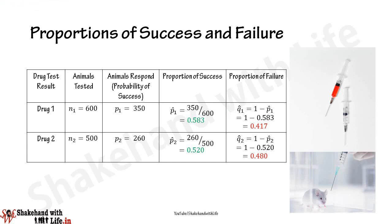The proportion of success in sample two is p2-cap equals 260 divided by 500, which comes out as 0.520. The proportion of failure in sample two is q2-cap equals 1 minus p2-cap, which is 1 minus 0.520, giving 0.480. Here n1 equals 600 (the size of sample one) and n2 equals 500 (the size of sample two).